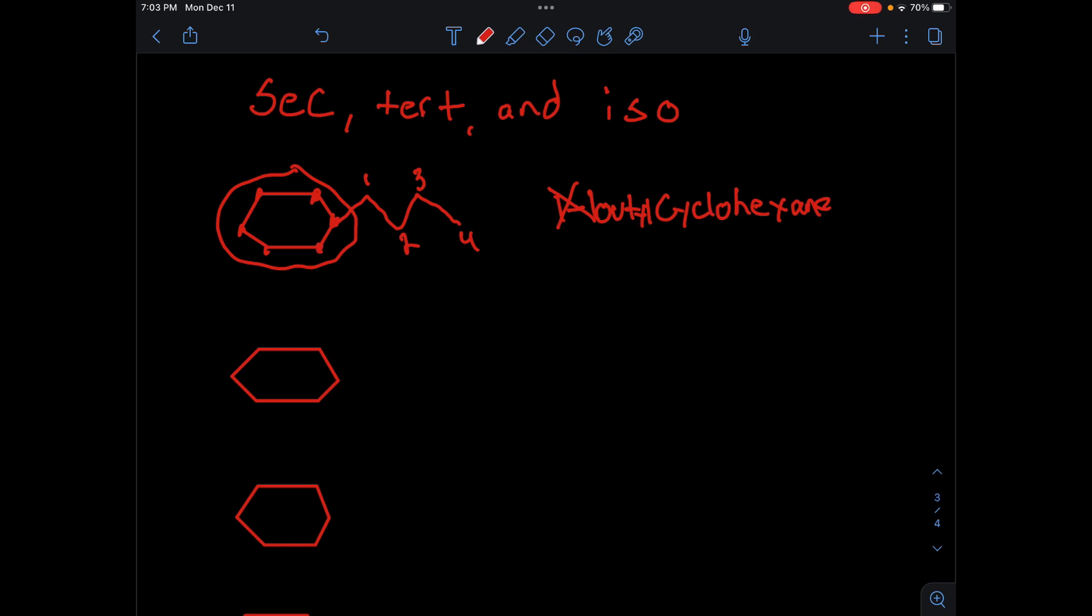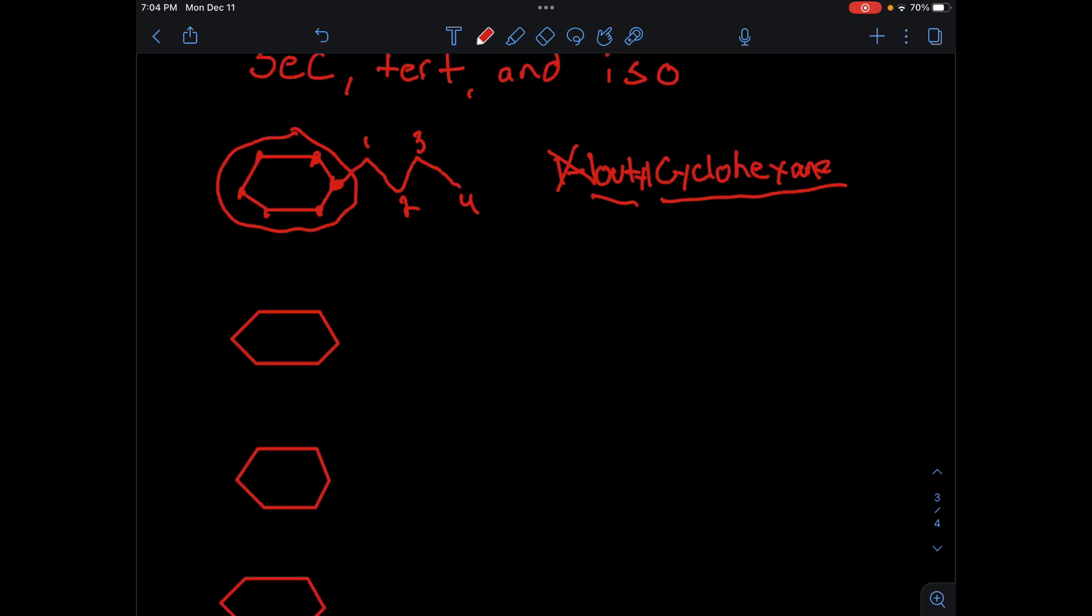So what if you have a situation where this is attached to the second carbon, such as one, two, three, four? So this is one carbon, two carbon, three, four. This is still a butyl group, but you wouldn't call it just butyl cyclohexane—it would be something called sec-butyl.